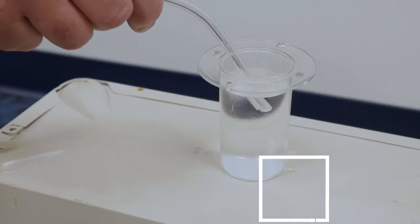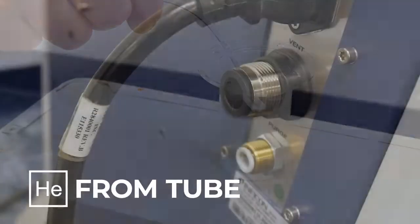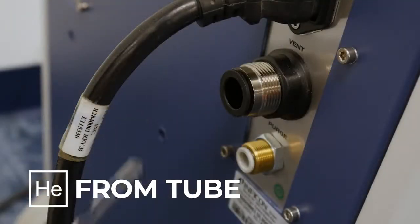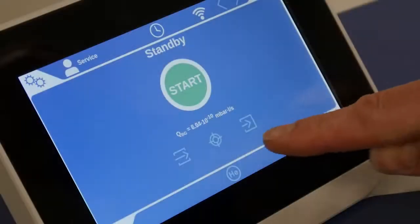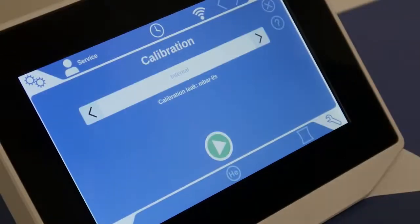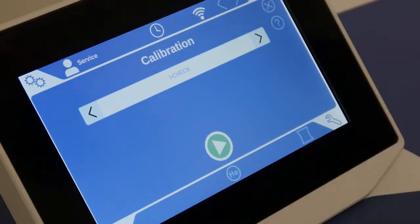We are simulating this now by spraying a tiny amount of helium around the purge inlet and using iCheck again. Select the crosshair icon. Select iCheck. Press the play button.